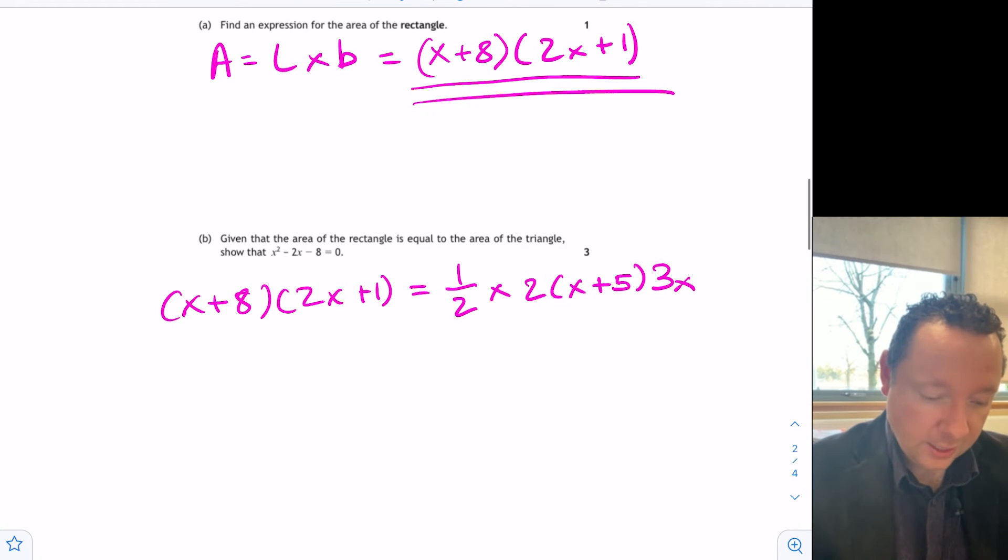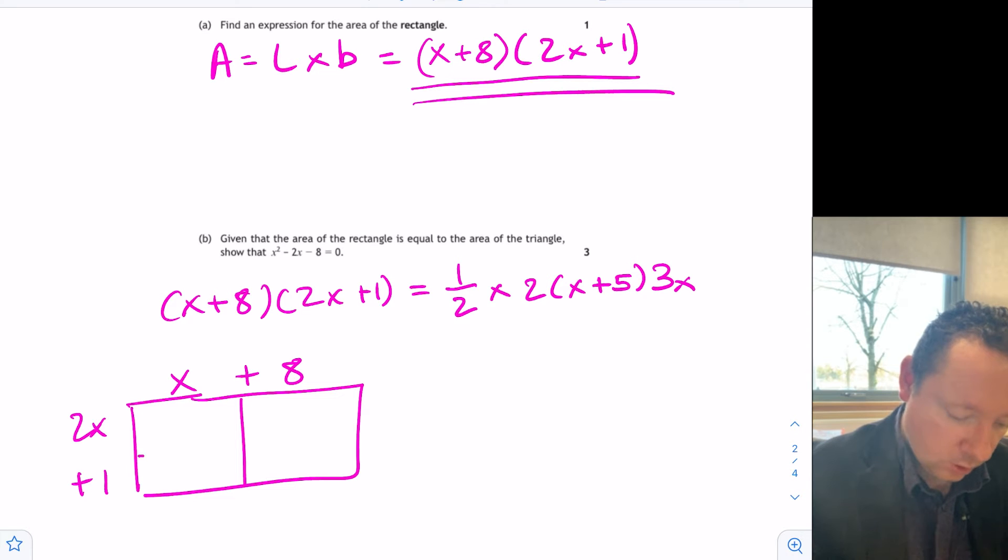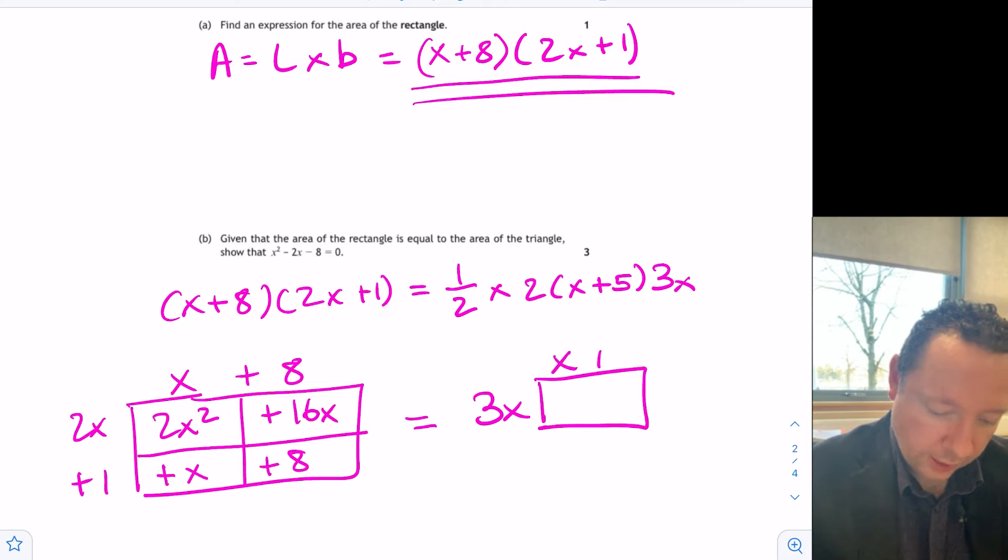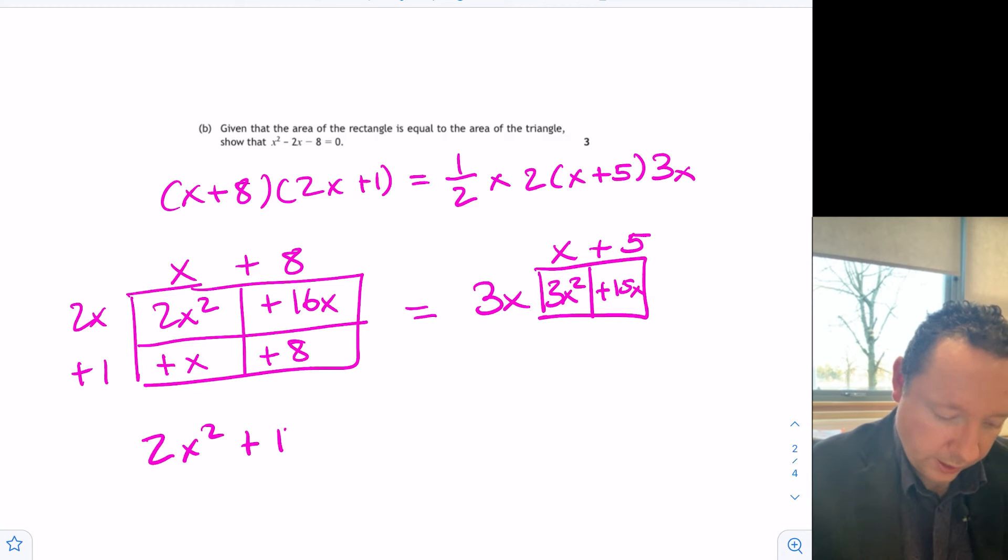So now, we need to expand some brackets. And we'll get marks for expanding our brackets if we've managed to write this down. So expanding the left-hand side, I usually use a box to get x plus 8 on one side and 2x plus 1 on the other side to get 2x squared plus 16x plus 1x plus 8. And that equals a half times 2 is 1. So that's 3x times x plus 5. So essentially, it's a half times 2 is 1, even just this to expand. That gives me 3x squared plus 15x. Tidying up the left-hand side, we get 2x squared plus 17x plus 8.